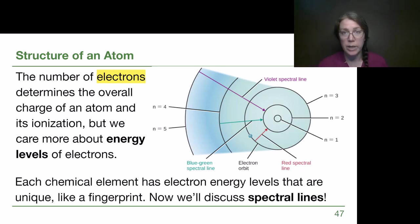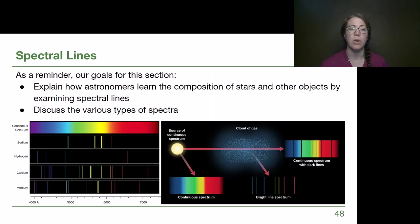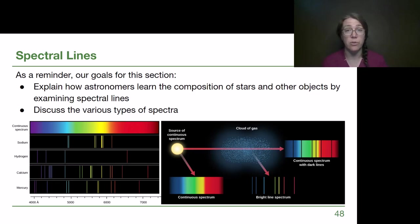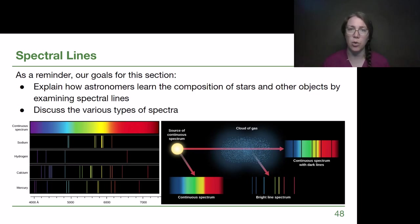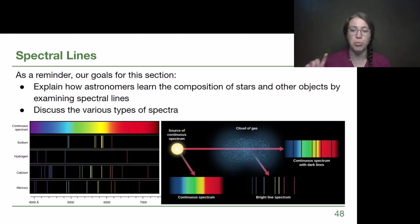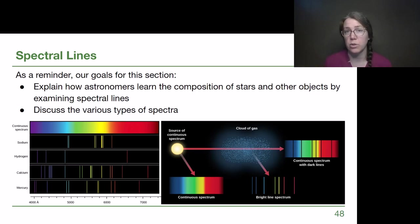Now we can start to get into what spectral lines are, where they come from, and how we can use them. Our goal for this part of the video is to understand how astronomers use spectral lines to figure out what elements are present — that's a big goal. Then we'll discuss three different types of spectra. Those types are shown on the right image: a continuous spectrum, a bright line spectrum (also called an emission spectrum), and a continuous spectrum with dark lines (also called an absorption spectrum).